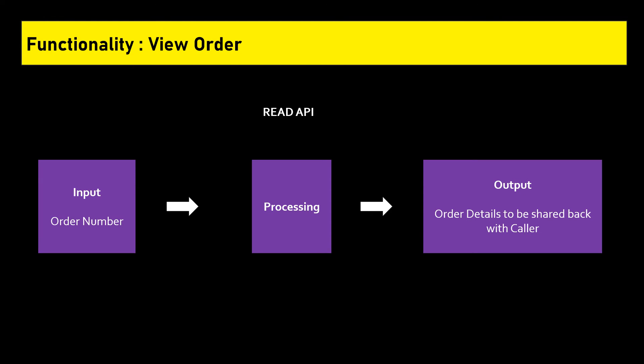Now let's move on to viewing order details. Once an order has been created, a customer may like to view the order details. Let's create another API for this. As with the Create API, this API also has three key components: inputs, processing logic, and output. For order details retrieval, at a minimum we need the order number. The processing unit reads the order database using the provided order number. If the read is successful, the order details are returned. If the order number is not found, then an error message is returned.